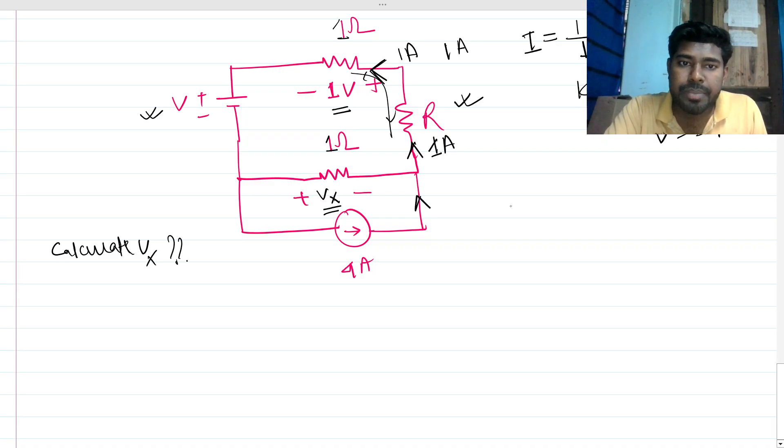There is an ideal current source of 4 amperes. If this is 4 amperes and this is one ampere, then in this way the current should be 3 amperes, because here we should apply KCL. So at this node, 4 amperes is nothing but equal to Ix plus 1 amp, right? So Ix is nothing but...